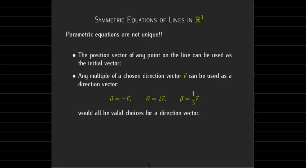Now, parametric equations are not unique. As we said, we could choose any point on the line to give us an initial vector, and we can choose any vector which is parallel to the line as a direction vector. In particular, if you have one direction vector, you can multiply that direction vector by any scalar and you'll get another perfectly valid direction vector.